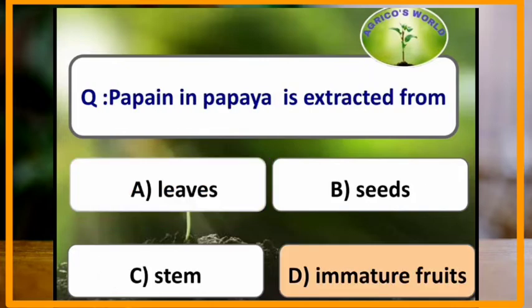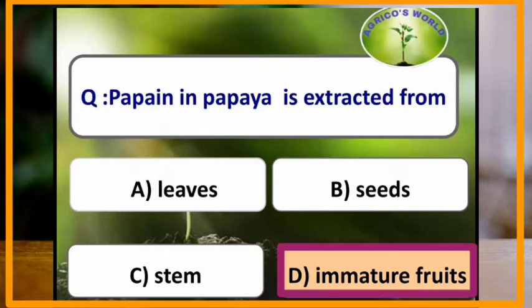Papain in papaya is extracted from which part of the plant? Papain in papaya is extracted from immature green fruits of papaya.